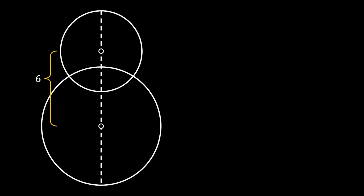We will start with the line of symmetry, then on this line we will input two points so the distance between them is six. Then from those points we will construct two circles so that they are intersecting at two points. Now from the centers of our two circles and their intersection points we will construct a rectangle.